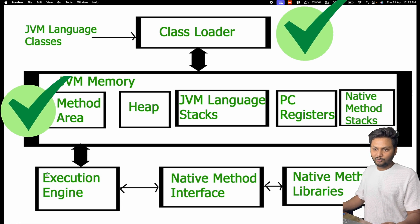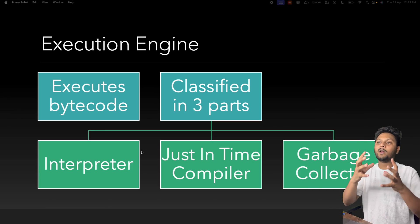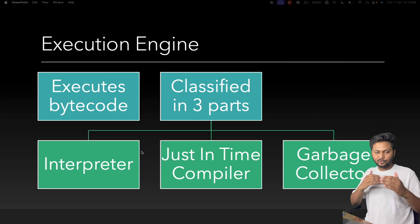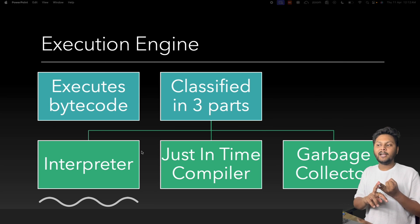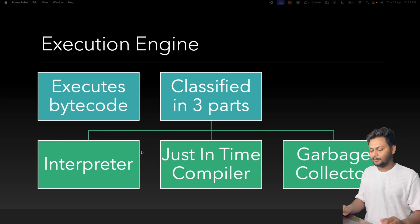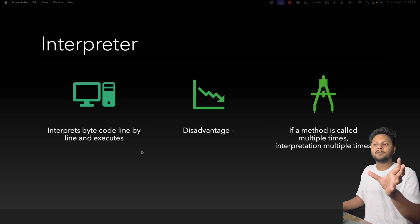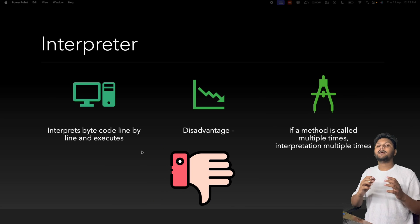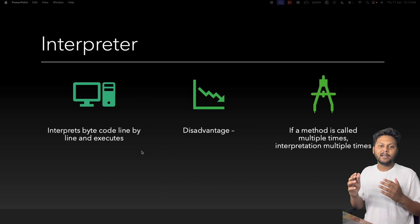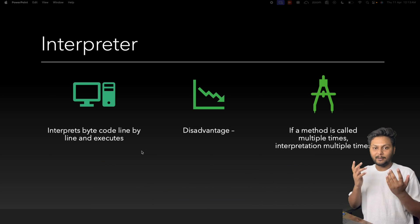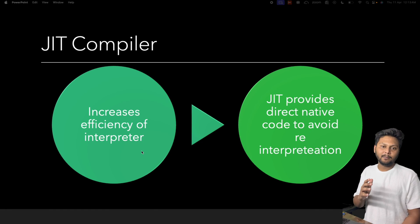The execution engine is the component that actually executes the byte code — the string of zeros and ones — picking it up line by line. The execution engine has three parts: interpreter, JIT compiler (just-in-time compiler), and garbage collector. The interpreter picks up byte code one line at a time and executes it, but has a disadvantage: if a method is called multiple times, it re-interprets it every time.